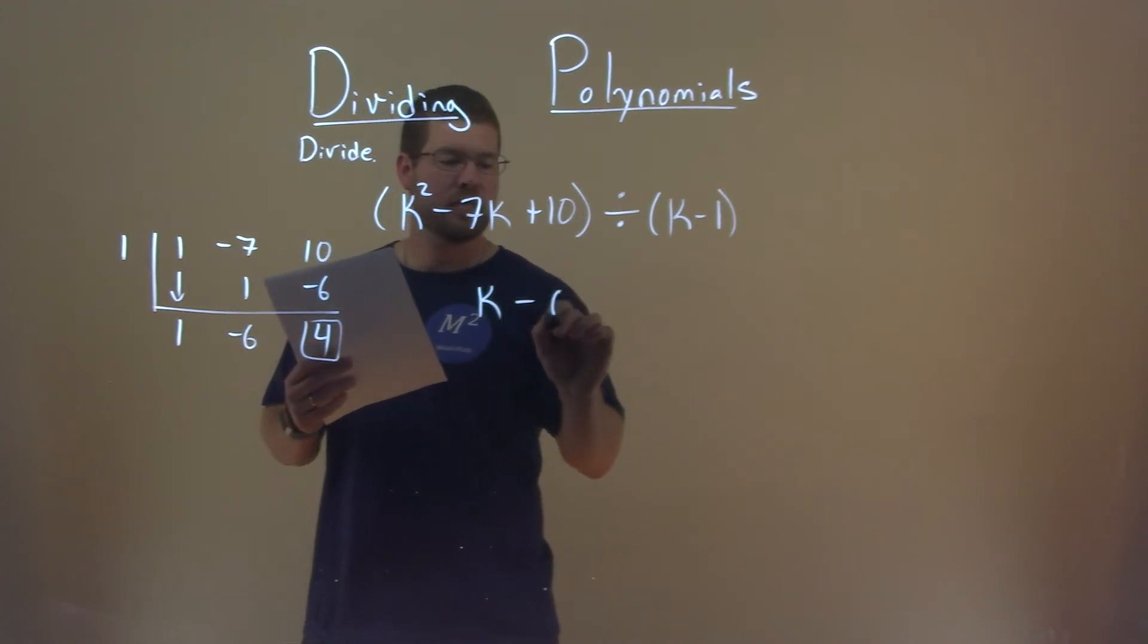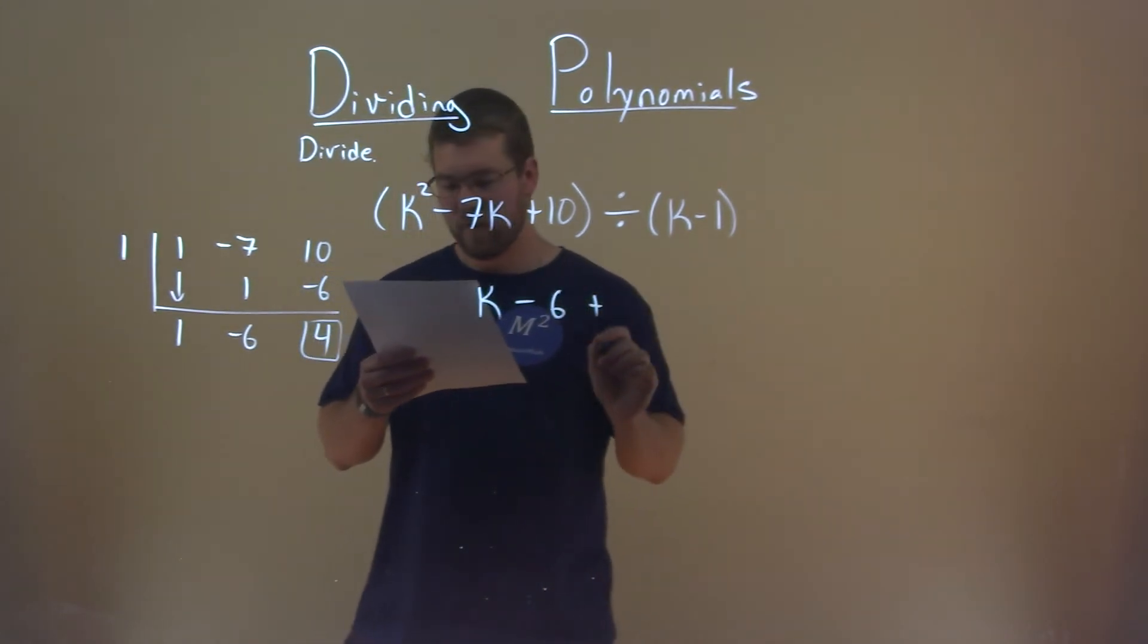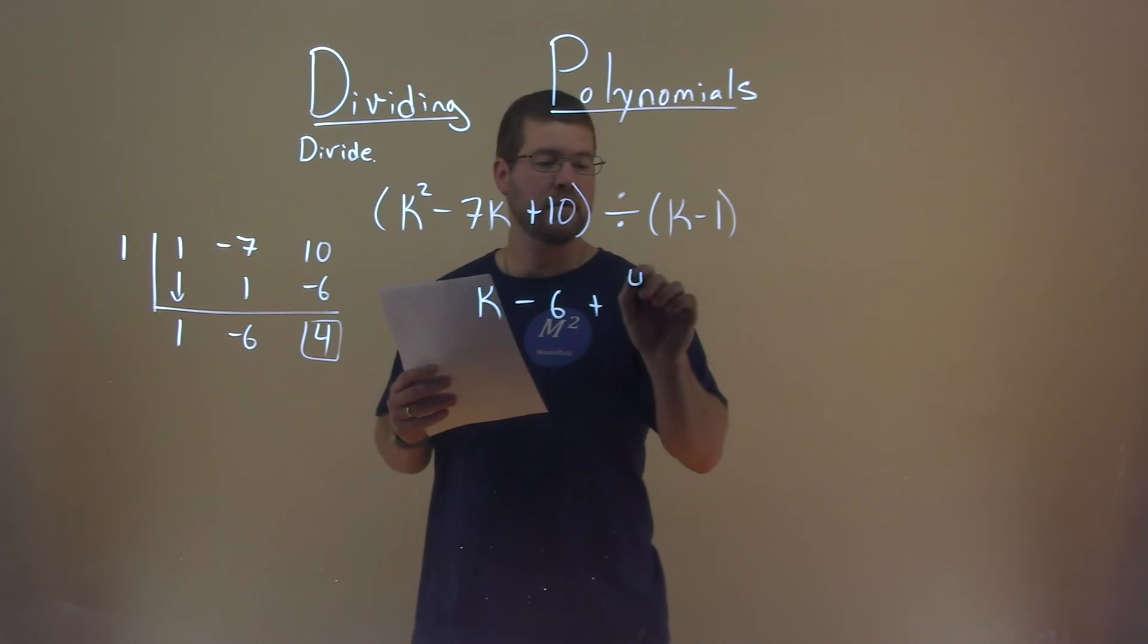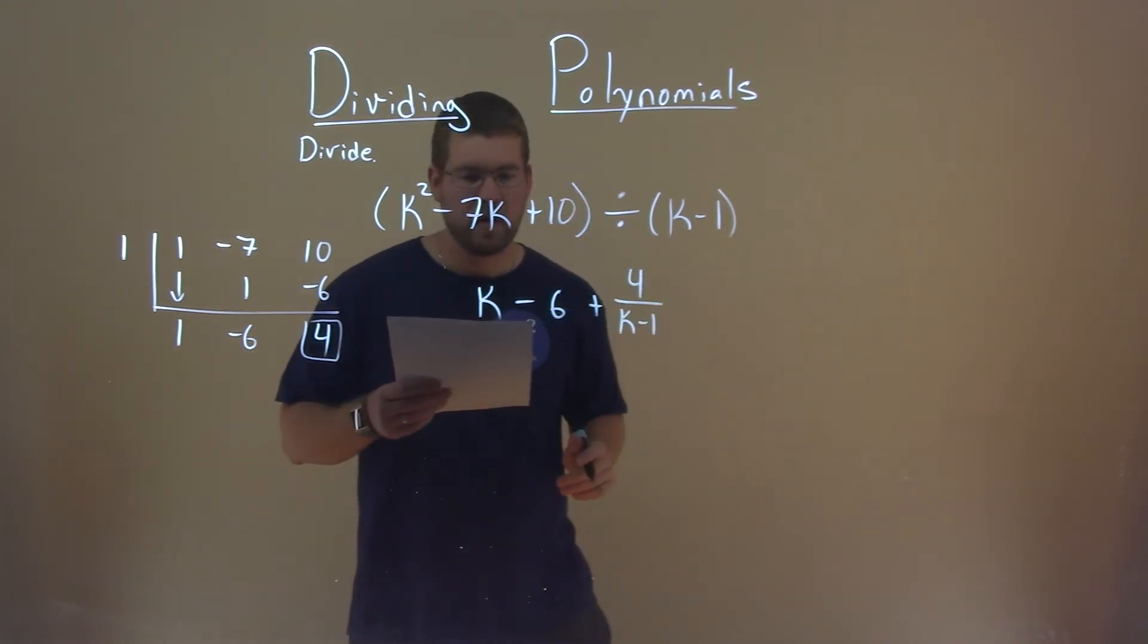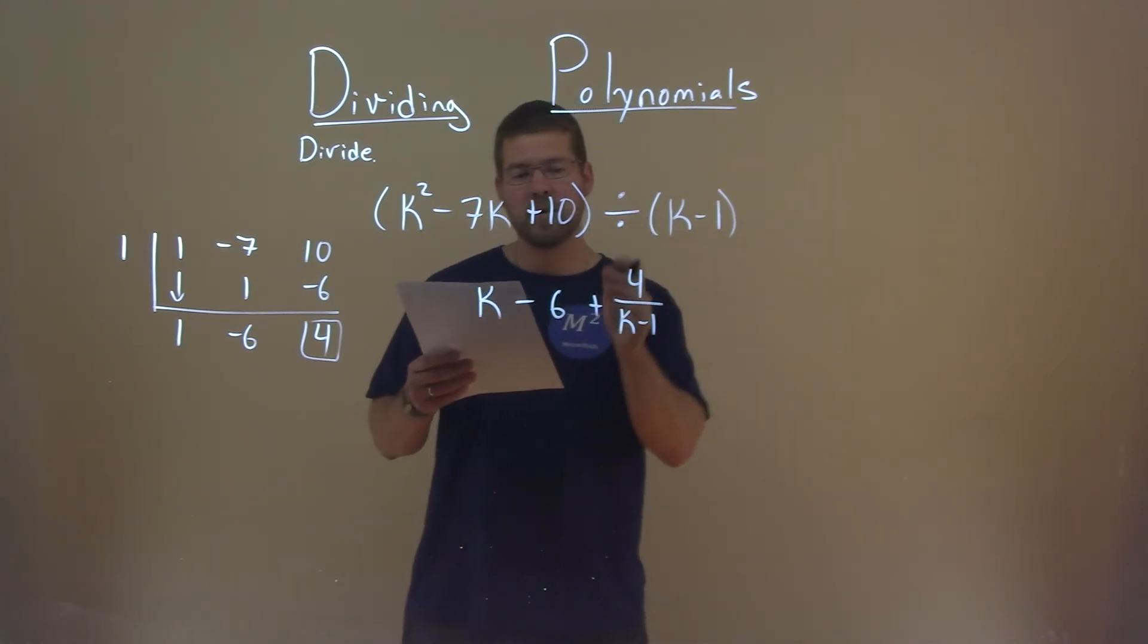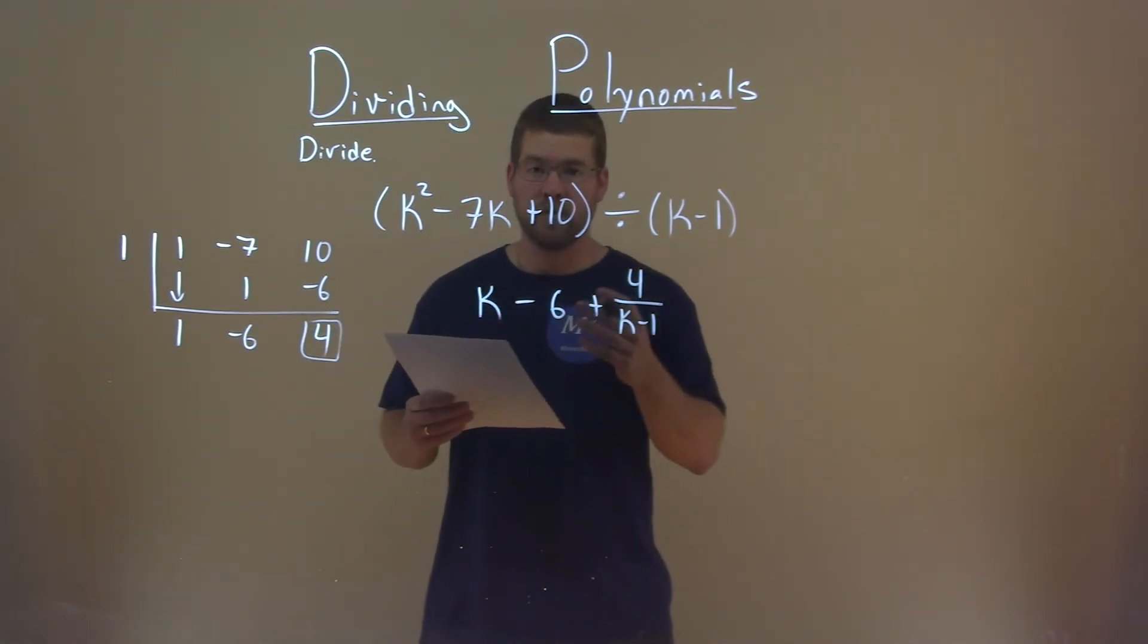Then, we have a minus 6 plus our remainder, which is 4, over, or dividing it by, k minus 1. And so, k minus 6 plus 4 over k minus 1 is our final answer.